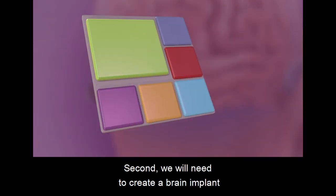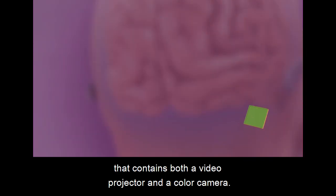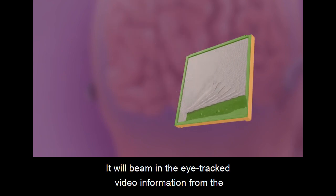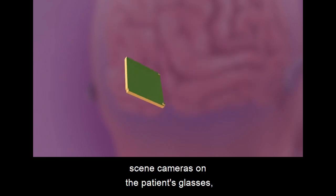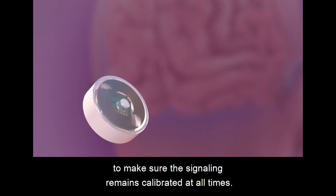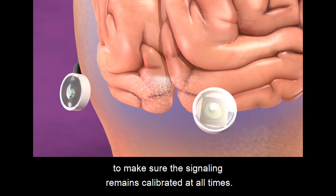Second, we will need to create a brain implant that contains both a video projector and a color camera. It will beam in the eye-tracked video information from the scene cameras on the patient's glasses and also read out the bioluminescent brain activity to make sure the signaling remains calibrated at all times.